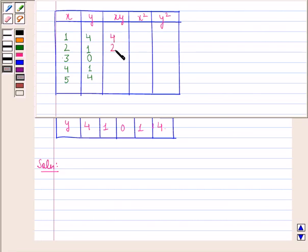So we will have 4, 2, 0, 4, 20 for xy. x square will be 1, 4, 9, 16, 25. And y square will be 16, 1, 0, 1, 16.